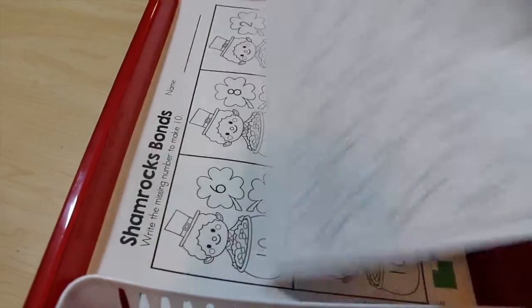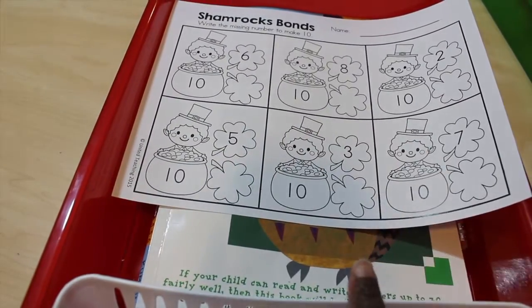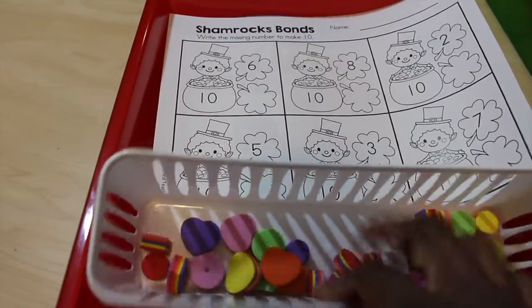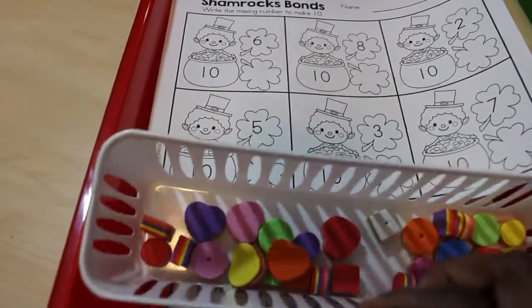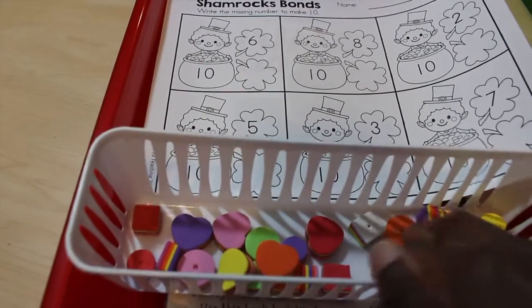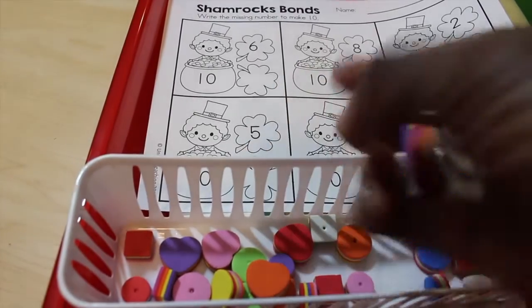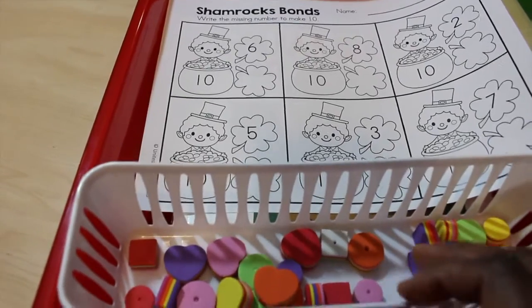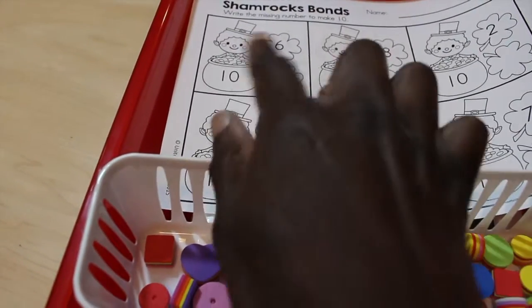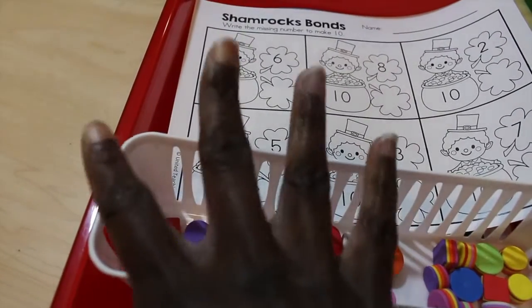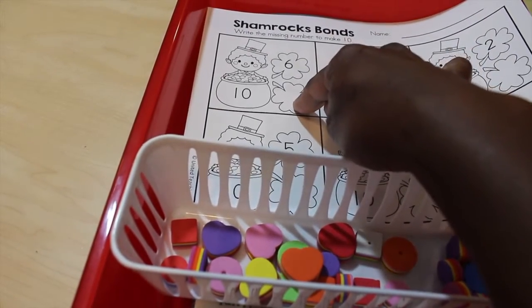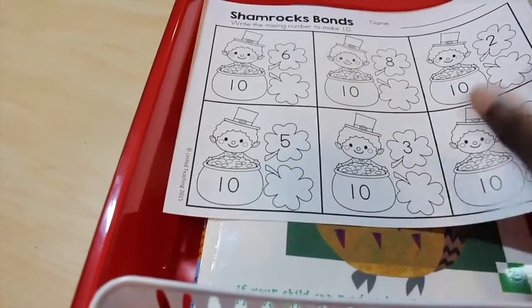And then here are shamrocks bonds, which are really cute. Number bonds up to 10 and so he has to find the missing number. So for that, I kind of included these little foam beads. To me, they look like Lucky Charms. So it's kind of St. Patrick's Day-ish. I got these from the Dollar Tree a while back. They're really lacing foam beads, but I just like the rainbow concept and they look like little Lucky Charms. So what he will do is he'll have 10. What he'll do is he'll put out 10 and then he'll take 6 out of them and then he'll see what's left and he'll put 4 here. And then we'll know that 6 and 4 make 10 and so on and so forth.